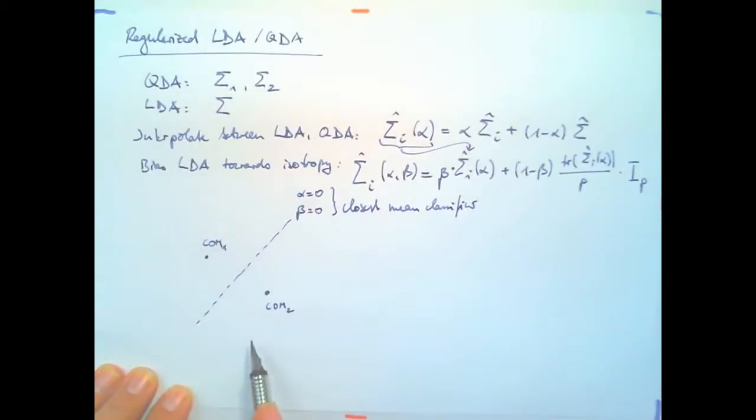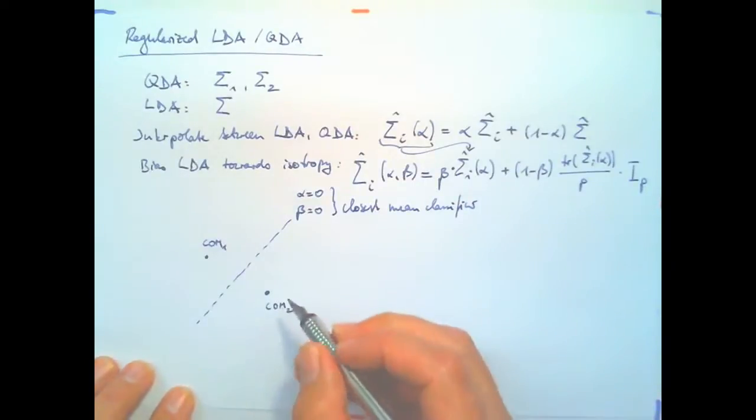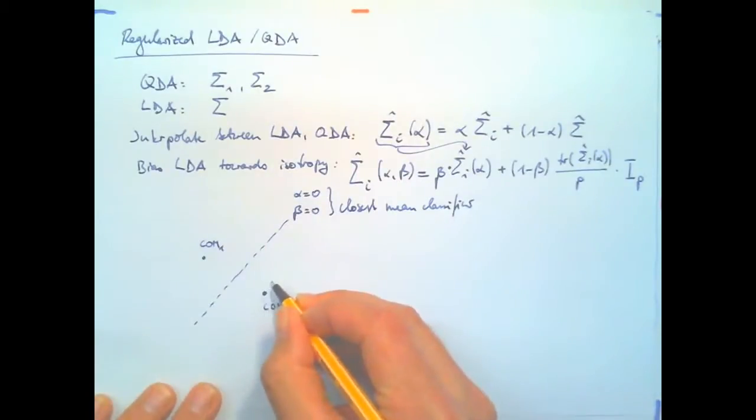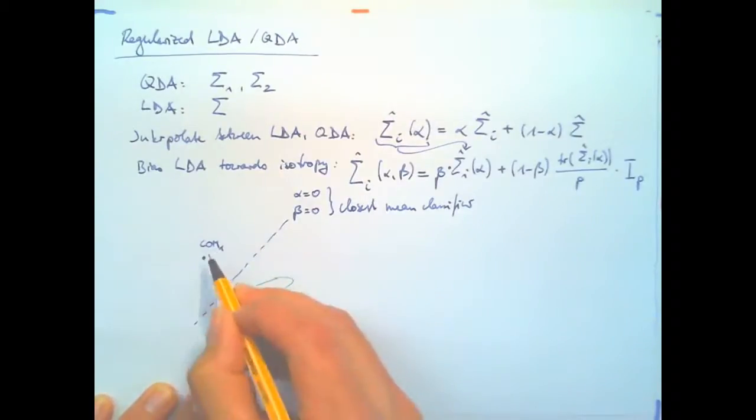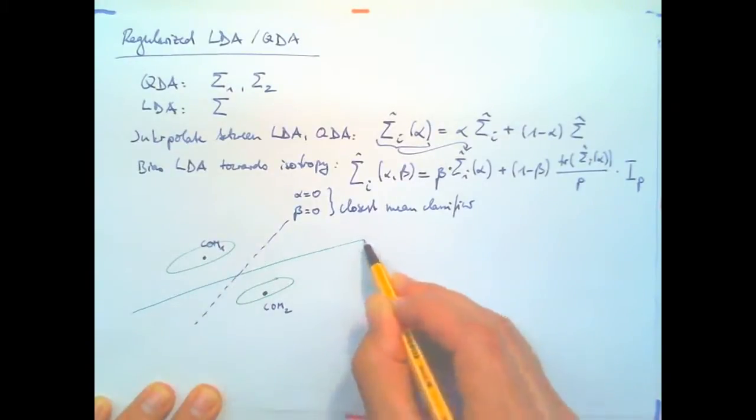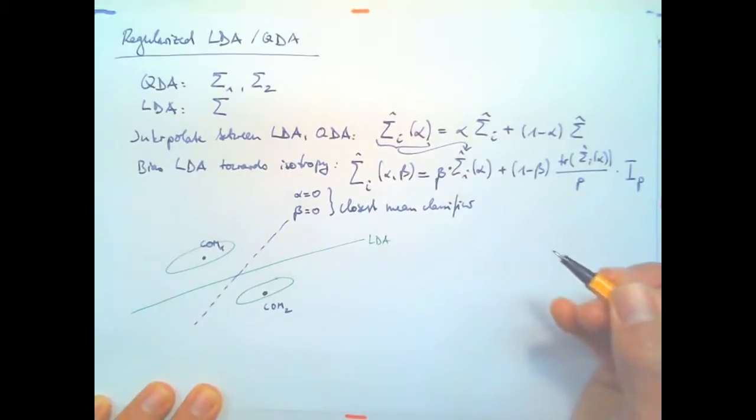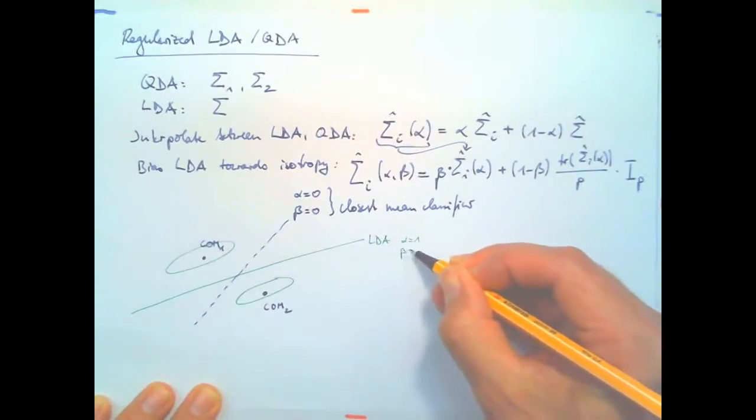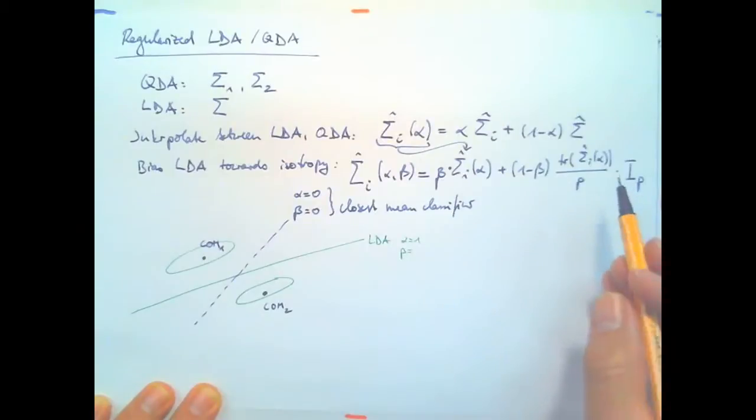Because for any point in feature space, it will simply look which of the class centers is closest and it will predict that class. And then we can have more complicated solutions if we estimate the same covariance matrix for both classes. So this is, say like that. We would obtain an LDA solution, which would look something like this. So the LDA solution we would obtain for alpha equals 1 and beta equals 1.